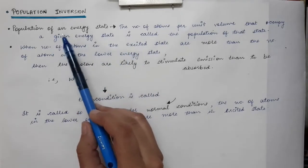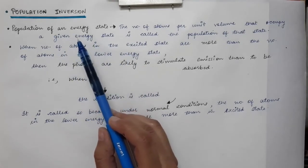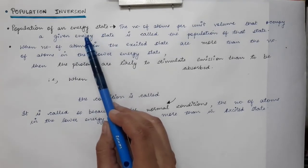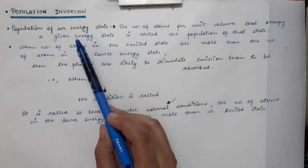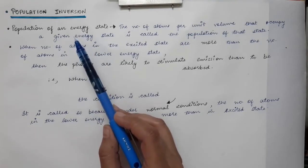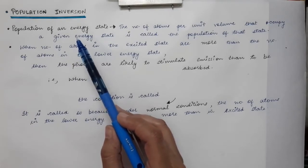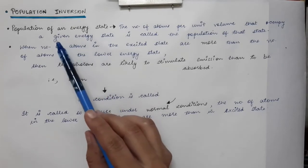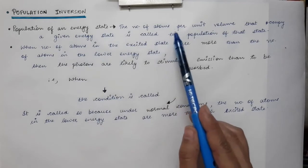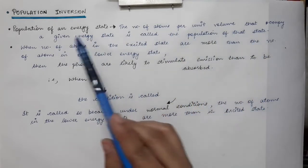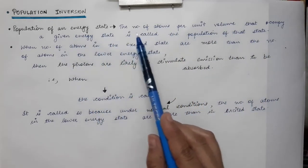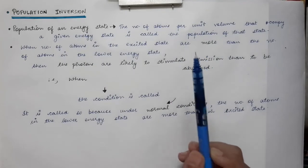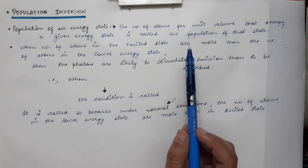By population of an energy state, we mean how many atoms per unit volume are present in that energy state of the medium. Under normal conditions, most atoms will be in the ground state and very few will be in the excited state. So population of an energy state is defined as the number of atoms per unit volume that occupy a given energy state.